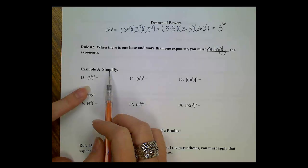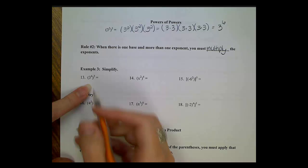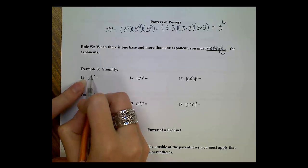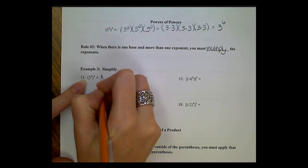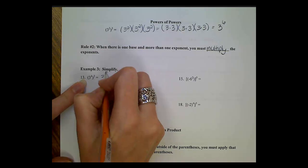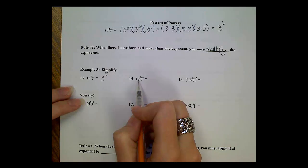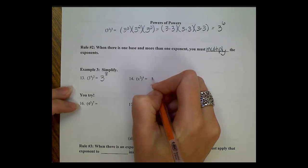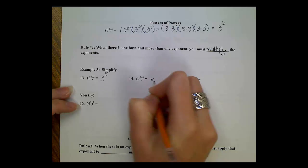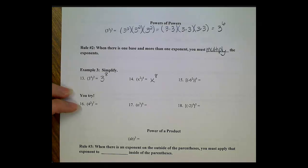Let's look at our first examples for this rule. We have one base of 3 and two exponents. The base stays the same and we multiply the exponents: 4 times 2 gives us 8. Since the directions don't ask us to evaluate, we leave the answer as 3 to the 8th. Next problem: x squared to the 4th power. The base stays as x, we multiply the exponents 2 times 4 to again get 8, giving us x to the 8th.